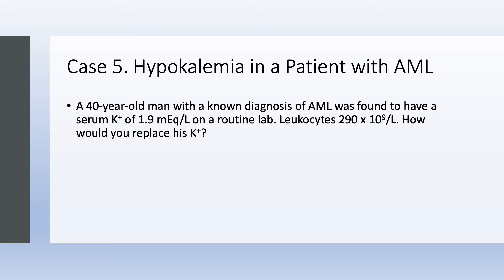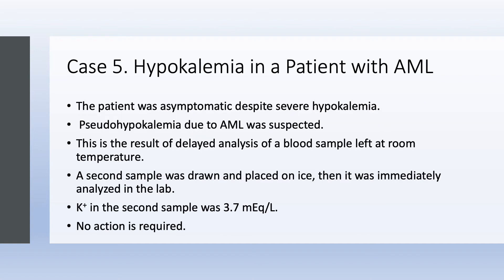Case number 5: Hypokalemia in a patient with acute myelogenous leukemia (AML). A 40-year-old man with known AML was found to have a potassium of 1.9 on routine labs. His leukocyte count is 290,000. The patient is asymptomatic despite severe hypokalemia — a clue that something is wrong. This is pseudohypokalemia due to AML: the blood sample sat in the lab and potassium was taken up by white blood cells. We repeated the sample with immediate analysis and got a potassium of 3.7. No action was required.